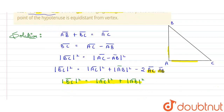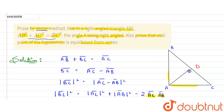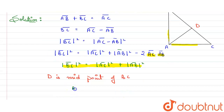Now let's prove the second part: the midpoint of the hypotenuse is equidistant from all the vertices. Suppose D is this midpoint, and we need to prove it is equally distant from points A, B, and C. Since D is the midpoint of BC, the magnitude of BC divided by 2 equals the magnitude of BD vector.